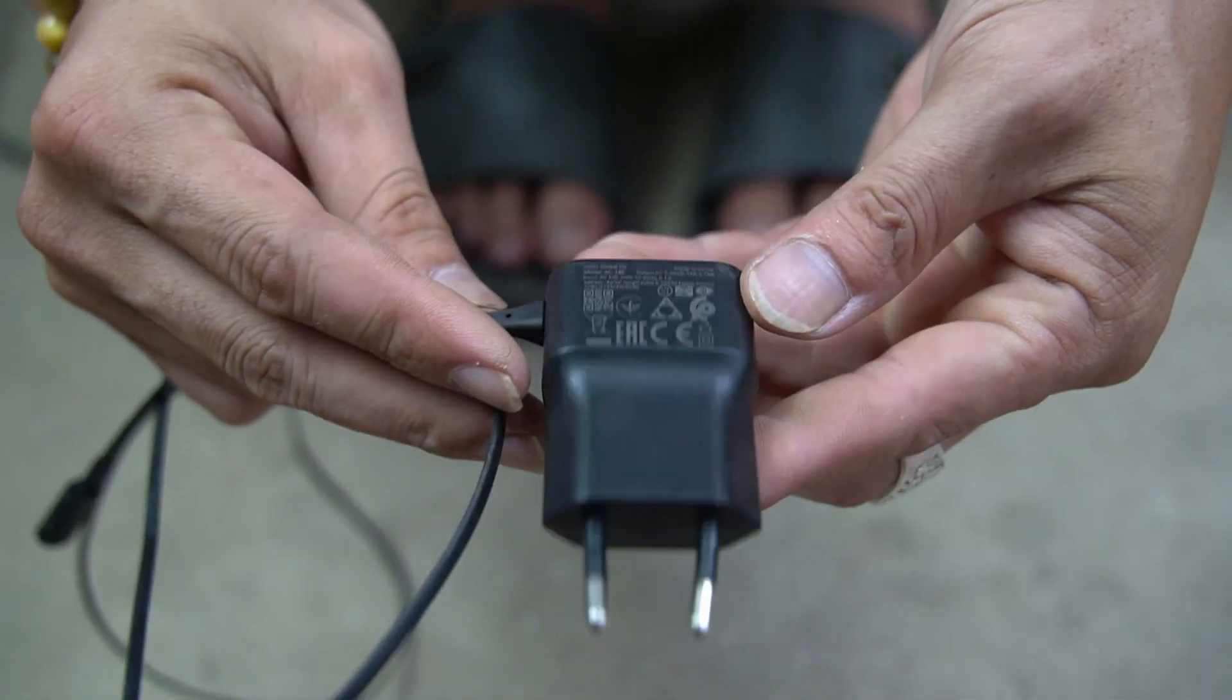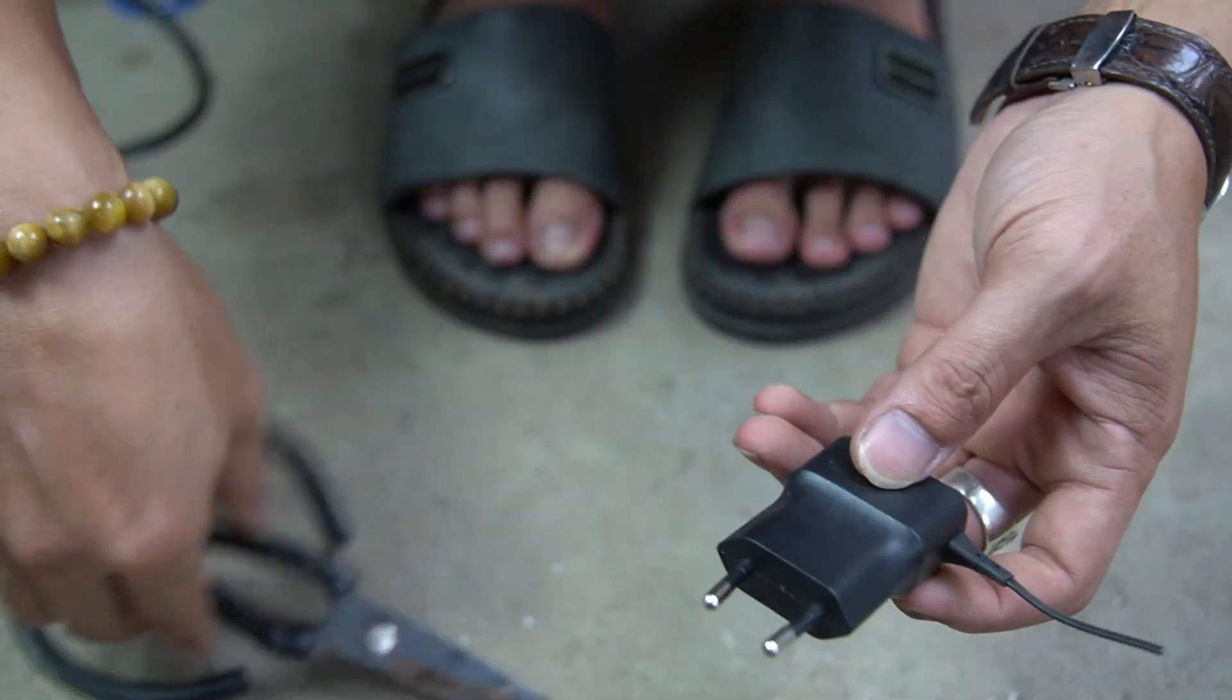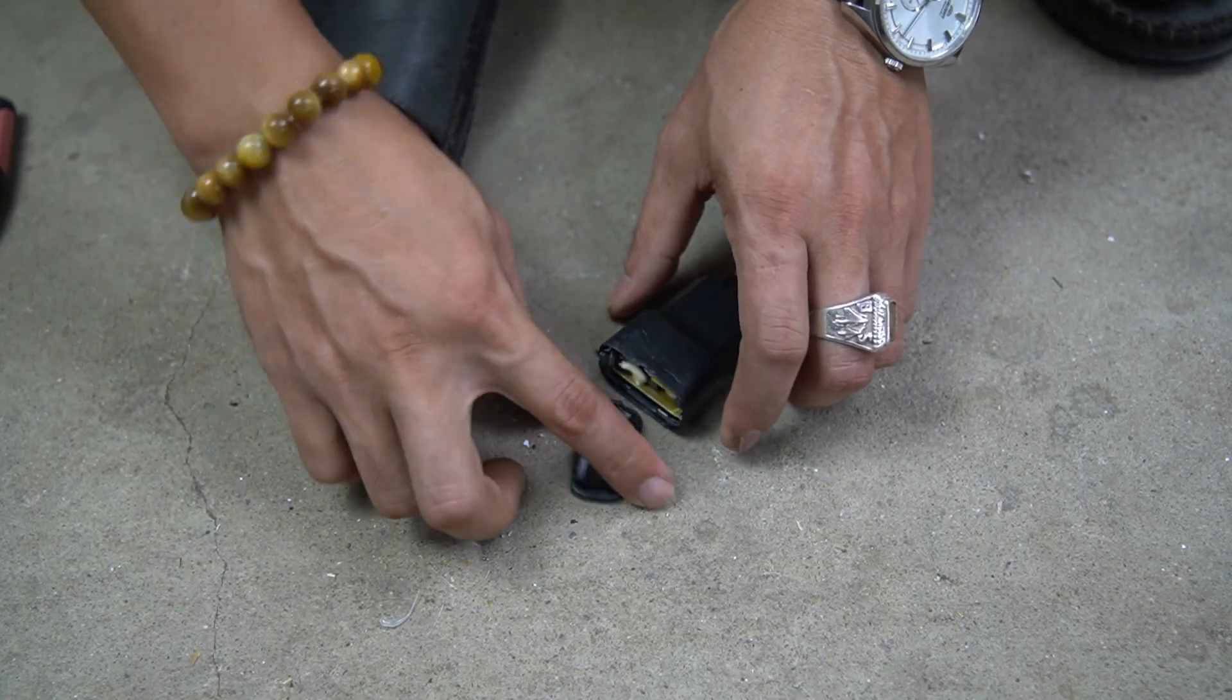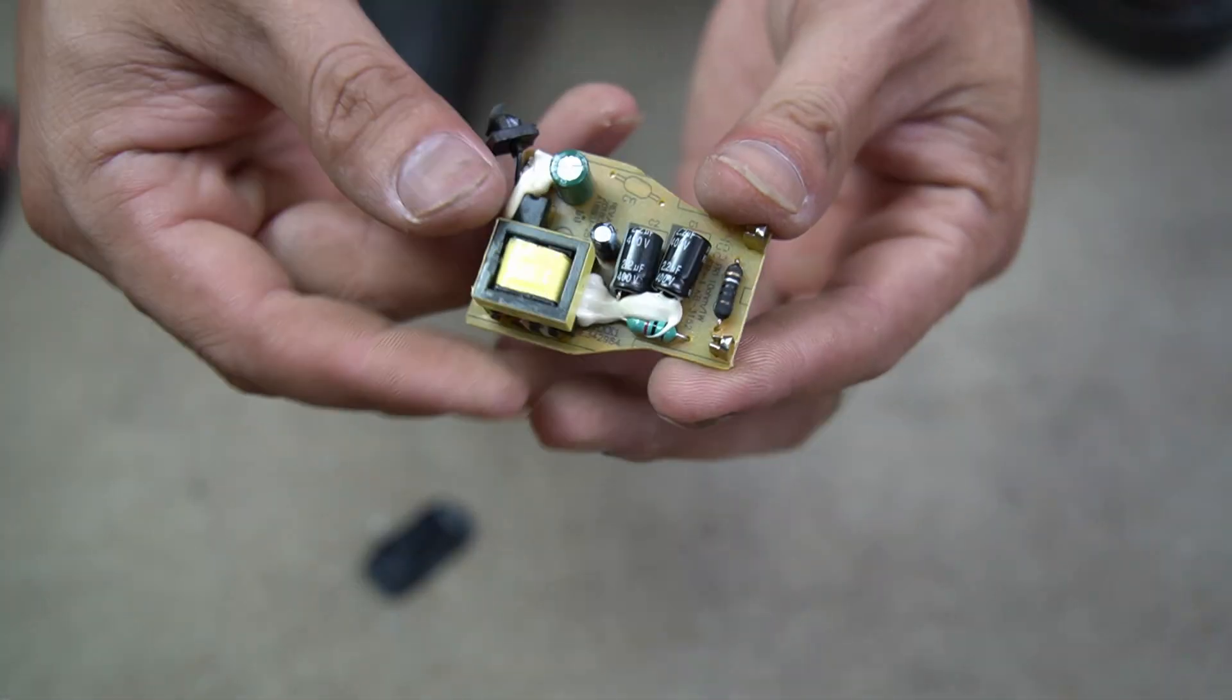Next, I used an old phone charger, then cut off the wire. I will take it apart and use the circuit inside.